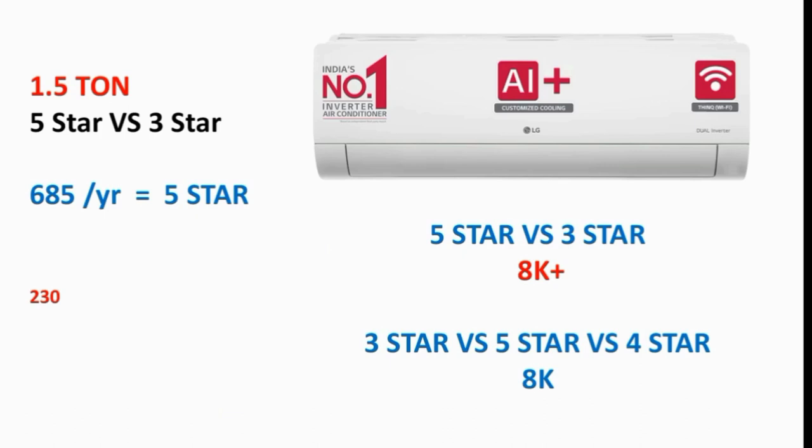If you pay USD $5 in electricity difference per year between a 3-star and 5-star AC, over time you recover the cost. That's why a 5-star AC is a fully efficient product — it pays back through lower electricity bills compared to a 3-star or 4-star AC.